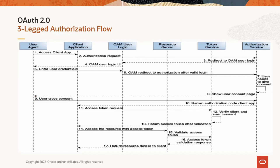In step 10, OAuth services return an authorization code to the client using the redirection URL. In step 11, the client requests the access token using the authorization code, client credentials, and other details. In transactions 12 to 13, the OAuth service validates the client request and issues the access token. Next, the client sends the access token to the resource server. Subsequent steps are for the resource server to validate the access token using OAuth services and return the requested resource to the client.